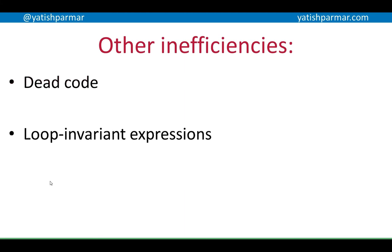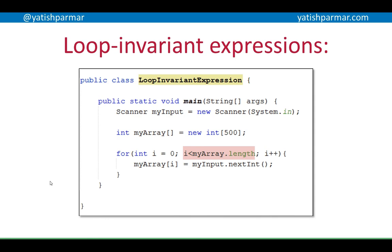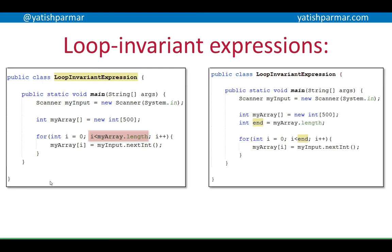Other inefficiencies include dead code — code that may never be reached during execution — and loop invariant expressions. For example, in Java, if you create a scanner and declare an integer array of 500 elements, checking the array length on every loop iteration is inefficient. It's better to assign the array length to a variable such as 'end' and check against that, or even better, just use the literal value 500 directly.